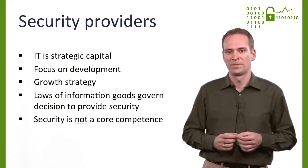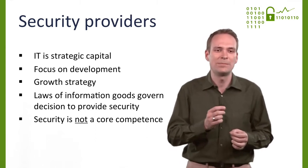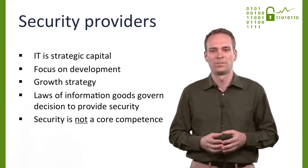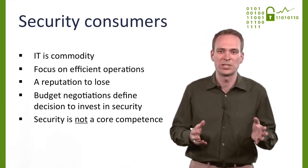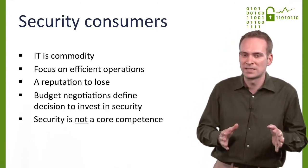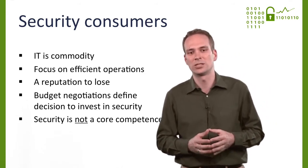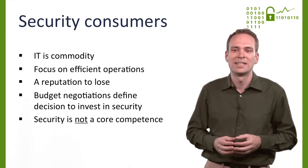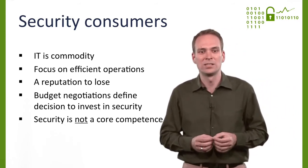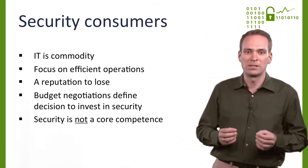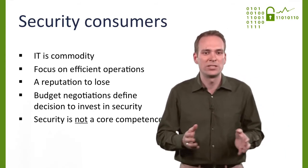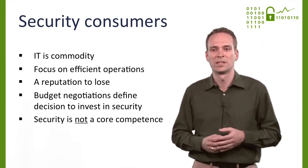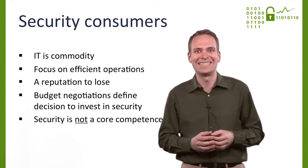Security providers — think of Silicon Valley — are characterized by IT being their strategic capital. They make money by developing this technology further, often following an aggressive growth strategy. Security consumers — think of Wall Street or Michigan — make money in some conventional business in mature markets, and since the 1990s increasingly with the help of information technology. IT adoption boosts their efficiency so that they remain competitive. For security consumers, IT services have become a commodity — goods without qualitative differentiation. For example, most banks cannot expect competitive advantage from a strategic differentiation in IT use. Everyone in the industry uses similar powerful office, communication and ERP systems. Or as Nicholas Carr memorably wrote in 2003: IT doesn't matter.